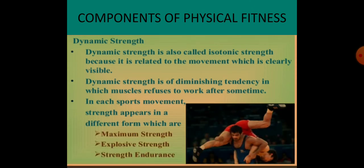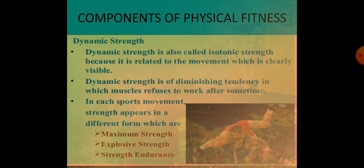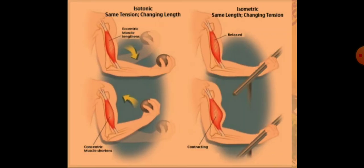Dynamic strength is also called isotonic strength because it is related to movement which is clearly visible. Dynamic strength is of diminishing tendency, meaning muscles refuse to work after some time and cannot work for longer duration. In sports movement, strength appears in different forms: maximum strength, explosive strength, and strength endurance — these are the types of dynamic strength most used in sports.